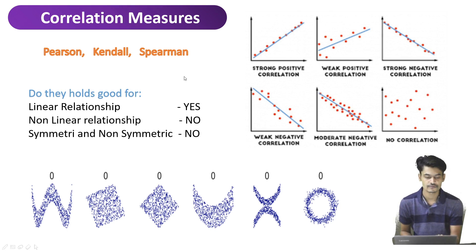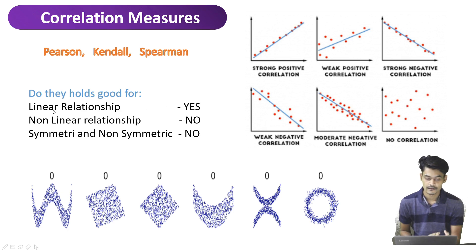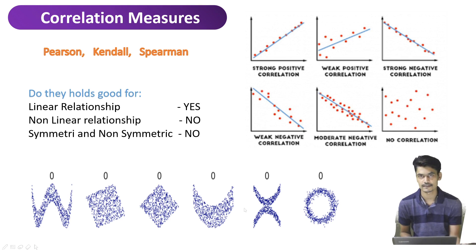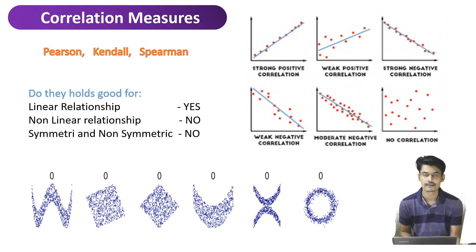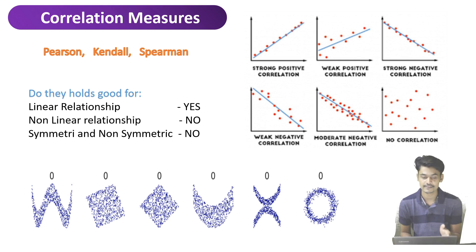We have three points to consider — whether they work well or not. For a linear relationship, Pearson, Kendall, and Spearman all three work well. For nonlinear relationships, we get a correlation value of zero for every nonlinear dataset — meaning there is no correlation detected. They also lack symmetry handling; they treat symmetric and non-symmetric data the same way during calculations. PP score overcomes all these limitations. It works for linear data, nonlinear data, and considers symmetry and non-symmetry, getting a meaningful value out of it.